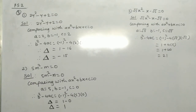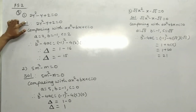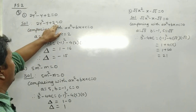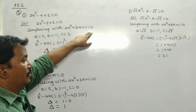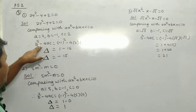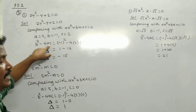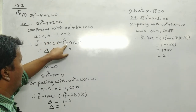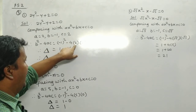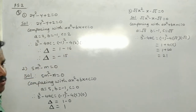Question 3: Find the value of the discriminant for each of the following equations. First equation: 2y² - y + 2 = 0. Comparing with ax² + bx + c = 0, we get a = 2, b = -1, c = 2. So discriminant = b² - 4ac = (-1)² - 4×2×2 = 1 - 16 = -15.